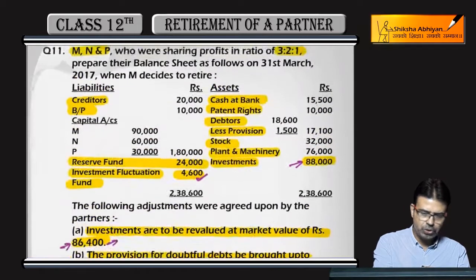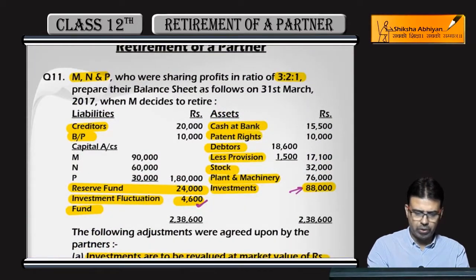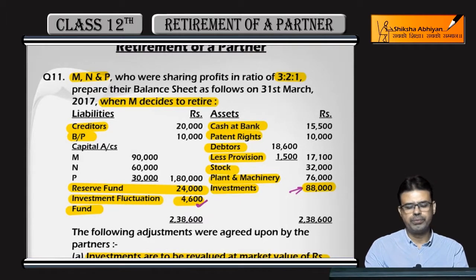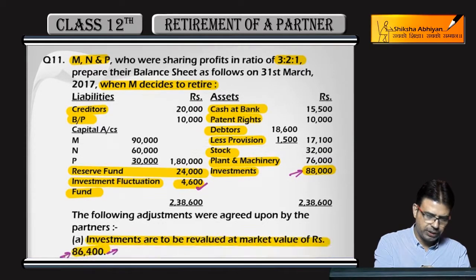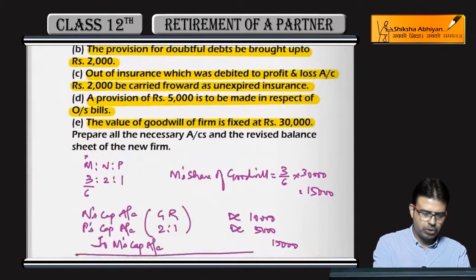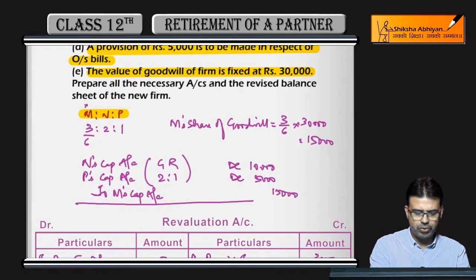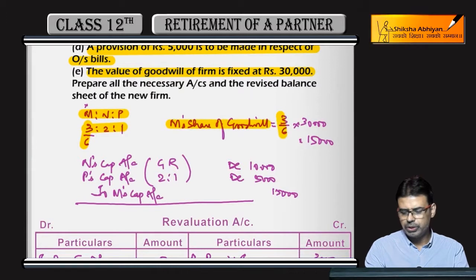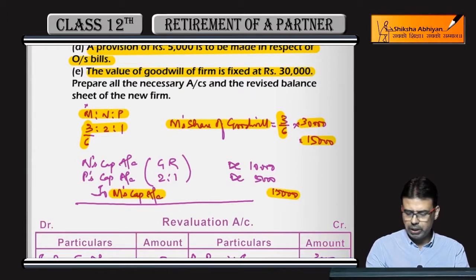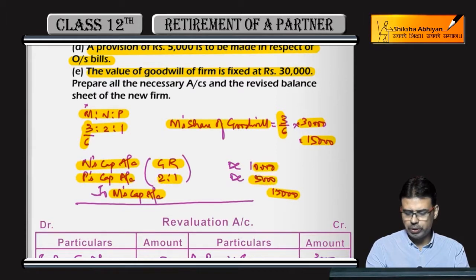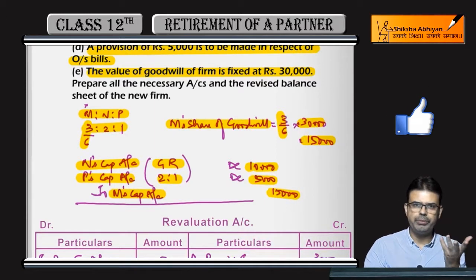M is retiring from the firm. The ratio is 3 to 1 and M retires. M's share is 3/6. So M's share of goodwill = 3/6 of 30,000 = 15,000. Give M 15,000. The other partners N and P will be charged in their gaining ratio of 2 to 1.